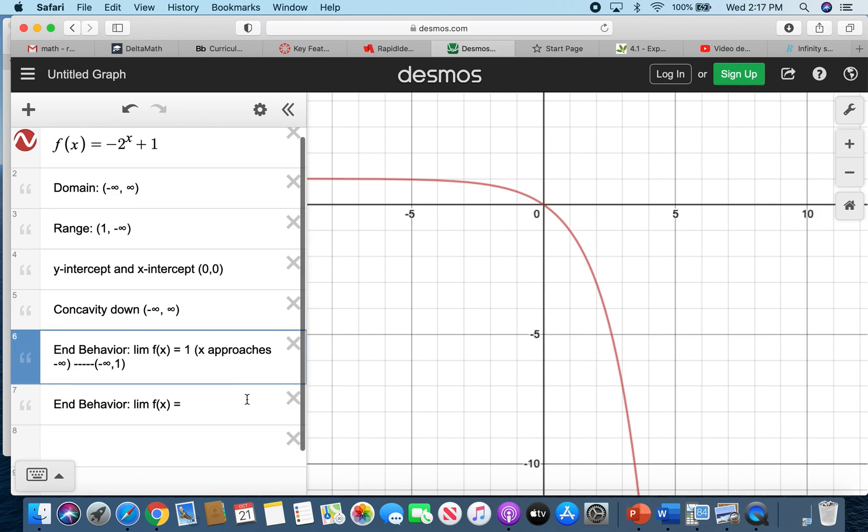Now, when it comes to the end behavior going to the right side of your graph, from left to right, now go to the right side, you would see that as the x is going in the positive direction, the y is going to the negative direction. So therefore,